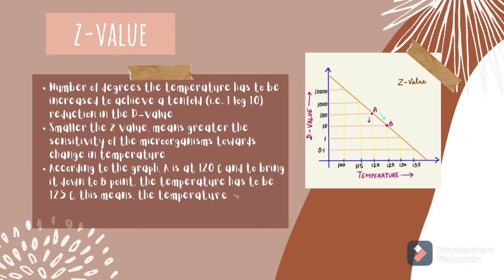Z-value is the number of degrees the temperature has to be increased to achieve a 10-fold fall. According to the graph, point A is at 120 degrees Celsius, and to bring it down to point B the temperature has to be 125 degrees Celsius — meaning the temperature should rise by 5 degrees Celsius. The smaller the Z-value, the greater the sensitivity of the microorganism towards change in temperature.